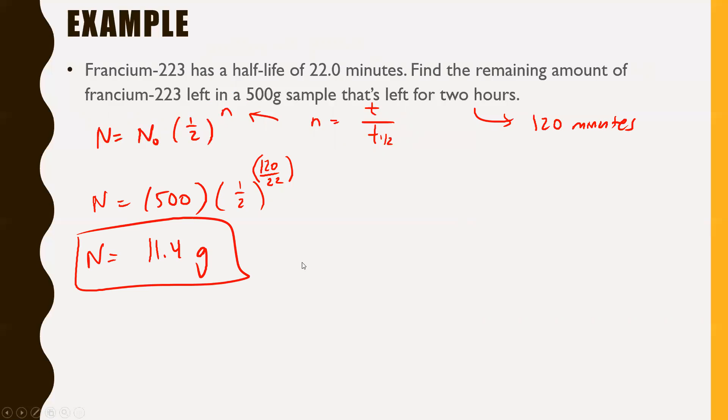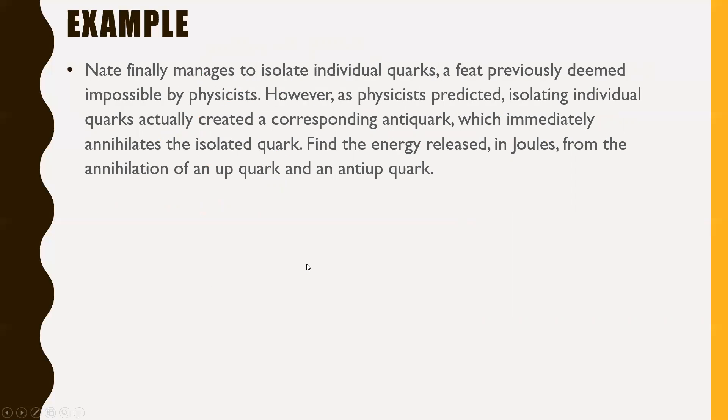All right. We've got one more question we're going to do. And this last question is a doozy. I do want you to give this one a try. Nate finally manages to isolate individual quarks, a feat previously deemed impossible by physicists. However, as physicists predicted, isolating individual quarks actually created a corresponding anti-quark, which immediately annihilates the isolated quark. Find the energy released in joules from the annihilation of an up-quark and an anti-up-quark. I'm going to tell you right now, you're going to want to use some details that are on your formula sheet, particularly the quote-unquote mass of a quark and of an anti-quark, of course, an anti-up-quark. So find that on your formula sheet. Give this one an honest shot and I'll go over it in a second.